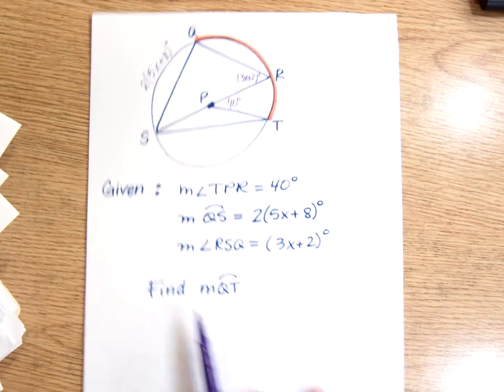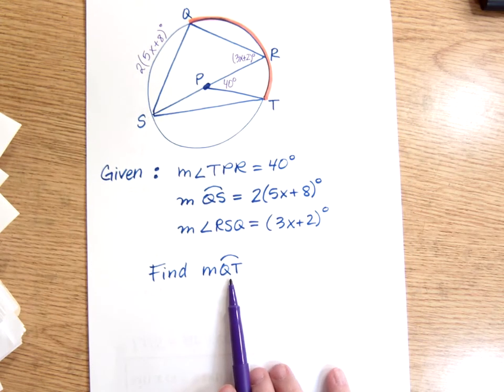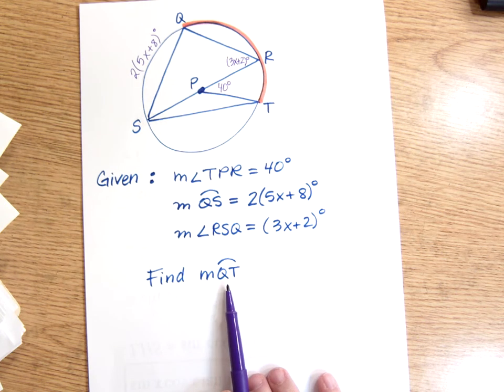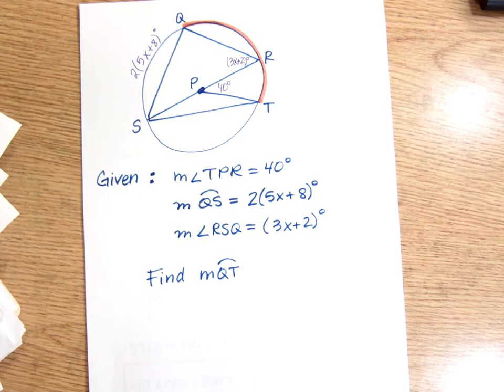So the fact that only two letters are used to name this arc means the smaller arc that starts with Q and ends with T, or starts with T and ends with Q. The smaller piece of the circle that has Q and T as their endpoints. Okay, so a couple of hints to get you started. Hint one.